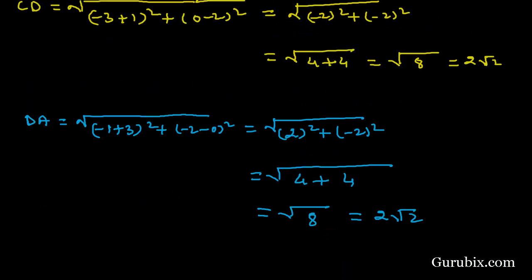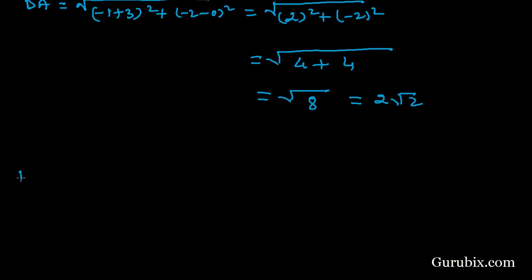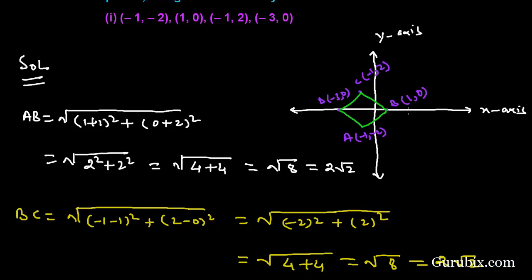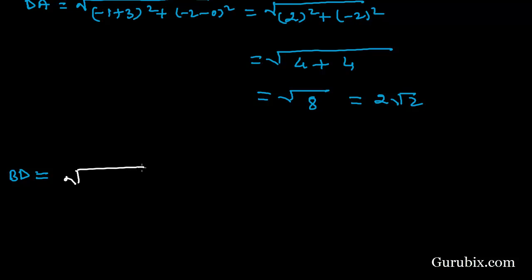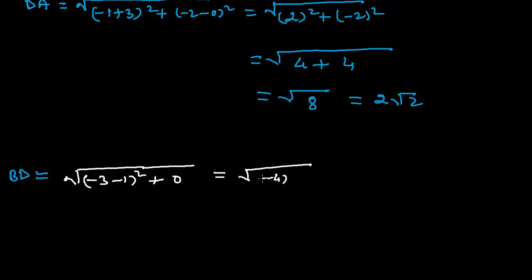We find the distance BD: coordinates of B are (1, 0) and coordinates of D are (-3, 0). It equals √((-3-1)² + (0-0)²) = √((-4)² + 0) = √16 = 4.